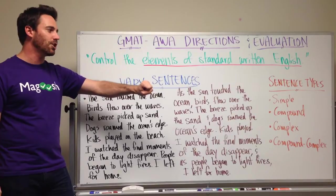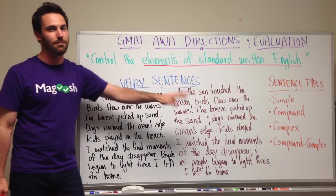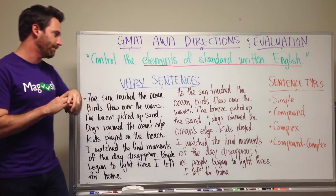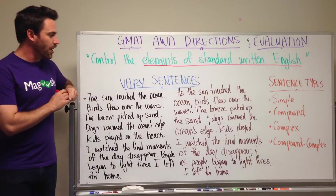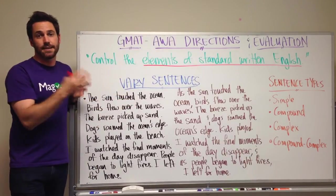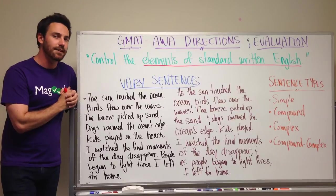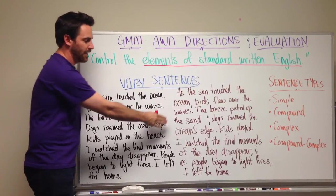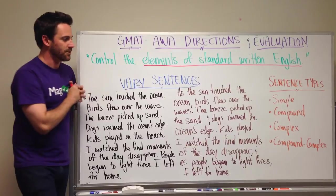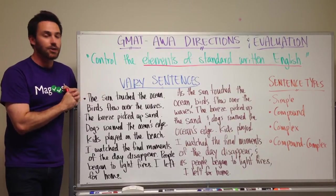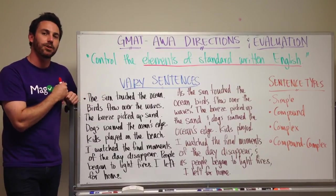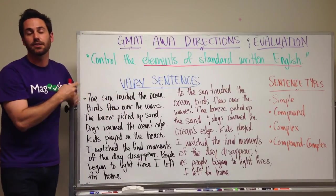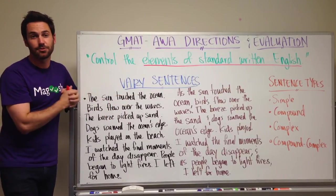We don't have enough time to really go into detail in this video about what these are, but I'll give you some examples right now. I have two passages here that say basically the same thing. The only difference is I've varied the sentences in this passage — the passage written in brown. So, let's look at what it looks like with no sentence variety, and then we'll look at it with sentence variety.